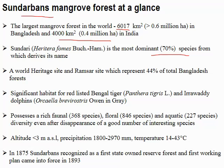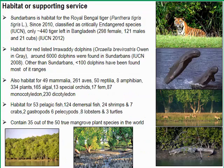The Sundarbans mangrove forest covers around 6,000 square kilometers in Bangladesh and 4,000 square kilometers in India. Sundari is the dominant species from which the name Sundarbans is derived, and it is also a UNESCO World Heritage Site. It supports around 44 percent of the bordering forest. The Bengal tiger and Irrawaddy dolphin are present. There are around 846 species of fauna and flora, approximately 220 aquatic fish species, altitude less than 3 meters above sea level, and temperature ranging from 14 to 43 degrees Celsius.